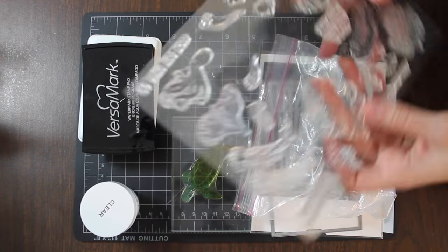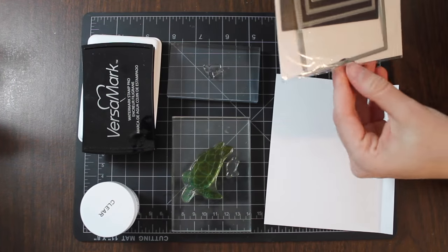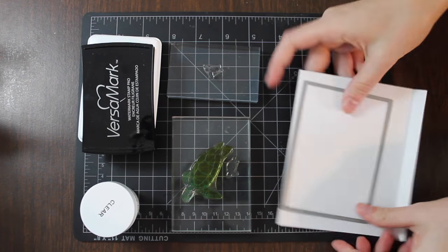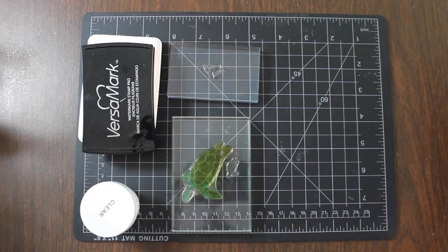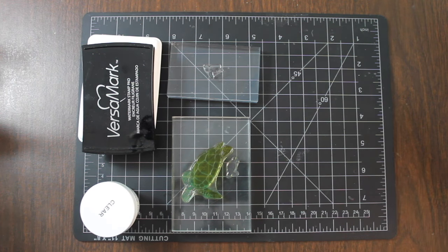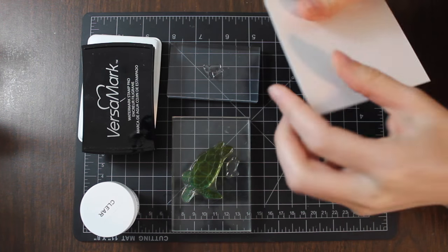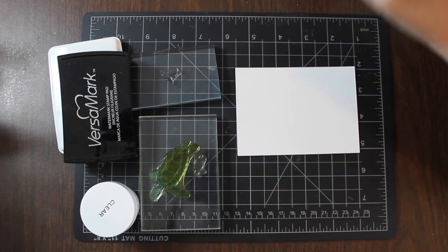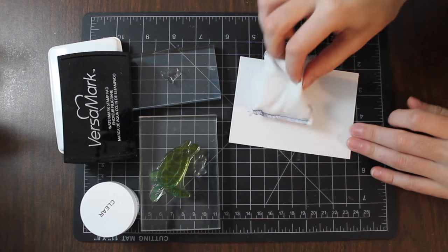To start off with, we're going to be using some turtles from the July My Monthly Hero kit and we're going to be stamping them onto a piece of die-cut cardstock. Once I have my cardstock die-cut, I'm going to prep it with some anti-static powder because I want to add a little bit of clear embossing to my turtles to give them a little bit of shine.